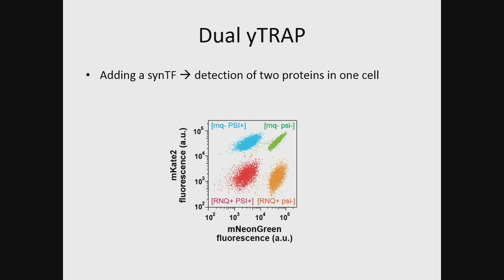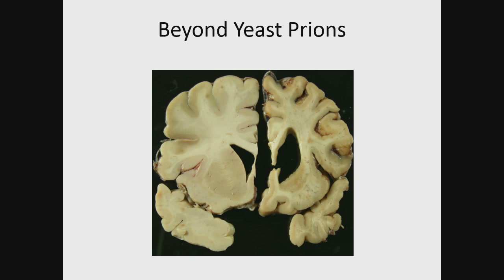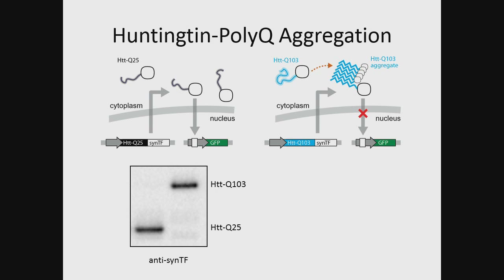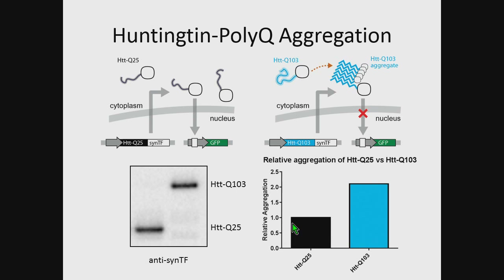Switching gears, we want to see whether we can apply Y-TRAP beyond yeast prions and look at a protein relevant to human disease. As our first model, we chose Huntingtin with poly-Q polyglutamine repeat. In individuals where the poly-Q repeat goes above 35 or 40 repeats, that individual is almost certain to contract Huntington's disease in their lifetime. Here I'm comparing the soluble readout of HTT with only 25 glutamines versus 103 glutamines, which we expect to be much more strongly aggregating. Even though both probes are expressed at the same level, we get a very different readout of their solubility — about two-fold more aggregation of HTT-103.